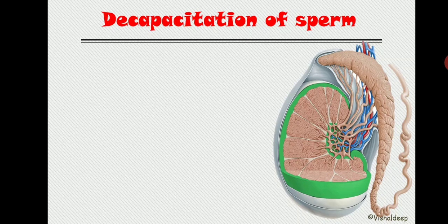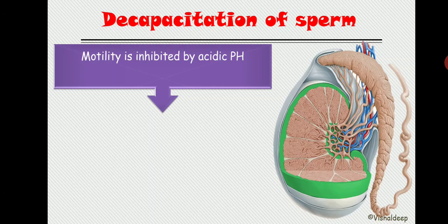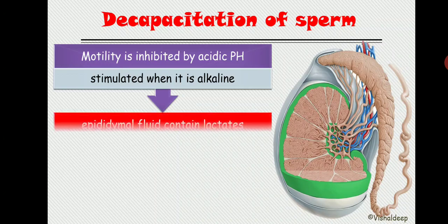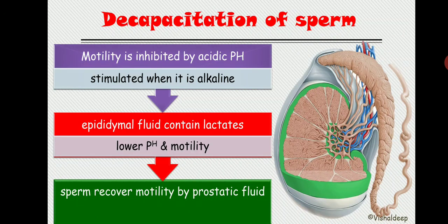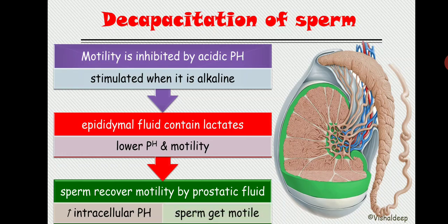Decapacitation involves stabilization of the cell membrane to prevent the spermatozoa from undergoing the acrosomal reaction. We want the acrosomal reaction to happen inside the female genital tract, not the male genital tract — so we need decapacitation to stabilize this membrane. Motility is inhibited by acidic pH and stimulated when the pH is alkaline. Epididymal fluid contains lactate, which lowers the pH and suppresses motility. Sperm recover motility from prostatic fluid, which has higher pH and increases intracellular pH, making the sperm motile.